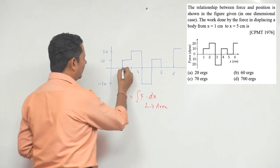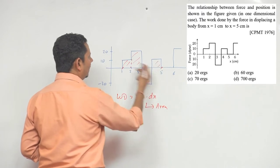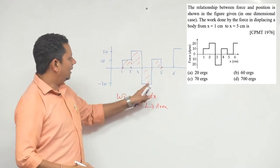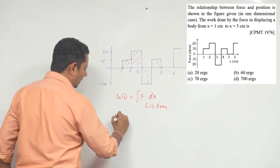We need to find the area from 1 to 5. This area we need to calculate. There is both a positive part and a negative part, so keep this in mind. The positive part will be added and the negative part will be subtracted.